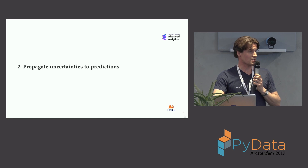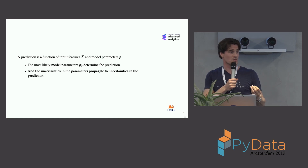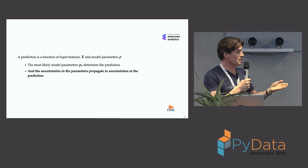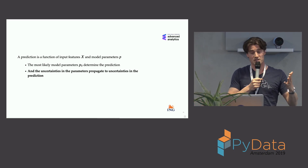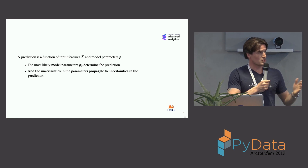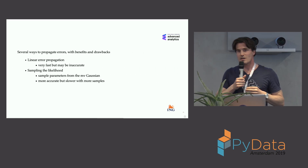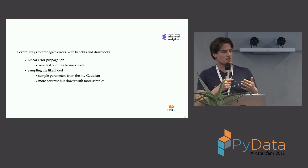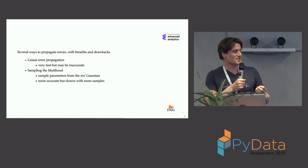Now that we have the uncertainty estimates on our model parameters, we can use these to also make uncertainties on our predictions. A prediction is basically a function that takes your features and the model parameters as inputs. We use the optimal model parameters to make the prediction, and we use the uncertainties on the model parameters to propagate to uncertainties on our predictions. There are actually several ways to do this — we've implemented more, but I'll highlight two.